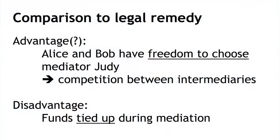In the physical world, a dispute about a car sale would probably go through the court system — a centralized, state-controlled mediation process. But what this blockchain-based escrow gives you is the freedom to choose your mediator. This is an entirely private contract between the two parties, and they can choose the mediator to be whoever they want. You can argue that the intermediary for dispute resolution has changed from a single mandatory entity that everybody must use to a competitive private market, where different intermediaries compete based on perceived fairness, efficiency, and low costs.